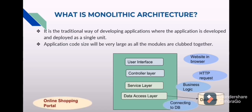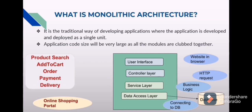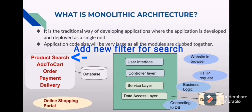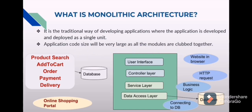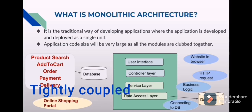Let's see one example: an online shopping portal. This online shopping portal consists of product search, add to cart, order, payment, and delivery. These are all different modules, but all of them are clubbed together and connected to a single database. The problem here is that if you want to make a change in the product search — say, add one more filter — you need to deploy the entire code. Even the other modules which were not changed also have to be deployed. So all these modules are tightly coupled.